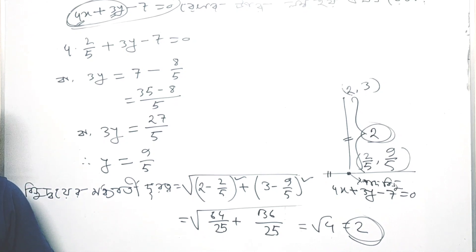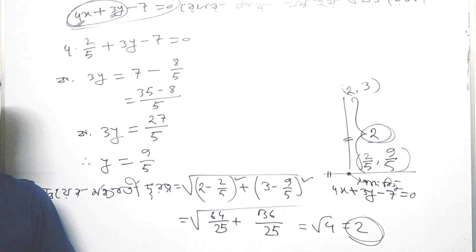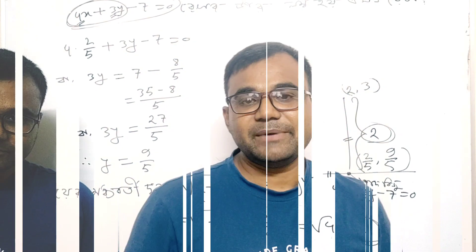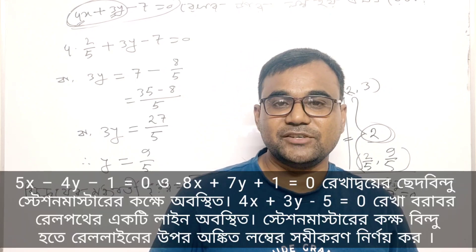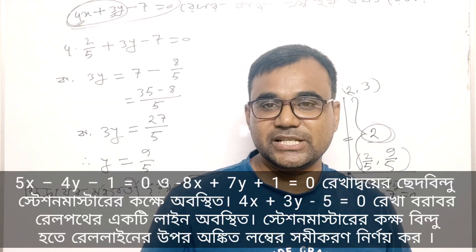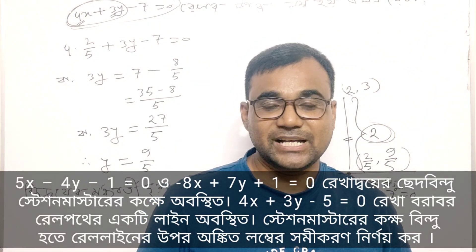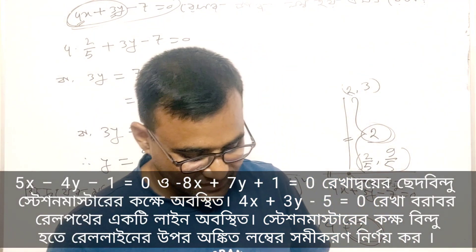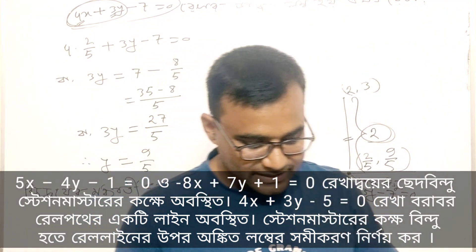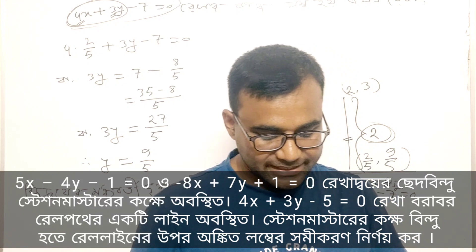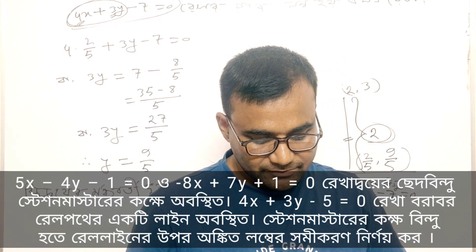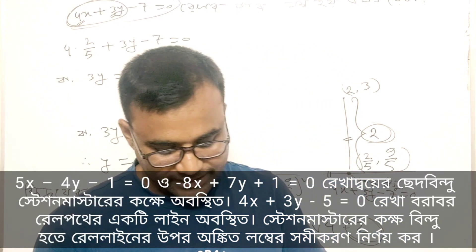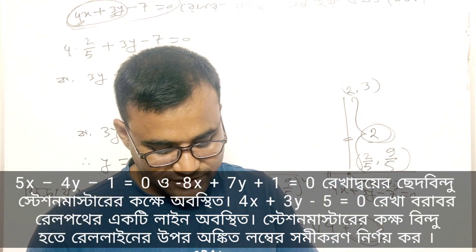I have solved the first question. There is a second question now. I'll start the new question. Now I will do the question: 5x - 4y - 1 = 0 and 8x - 7y - 1 = 0.